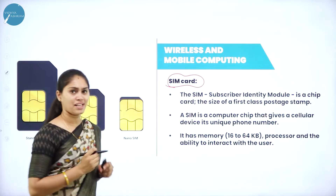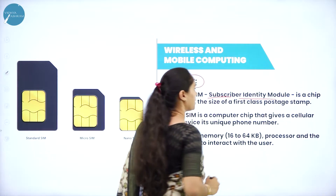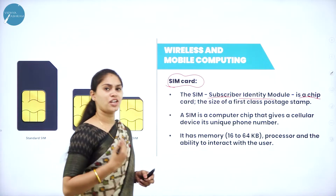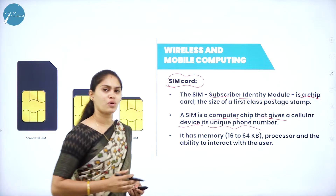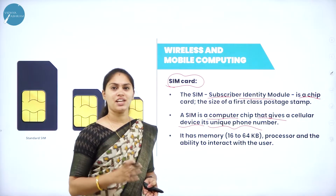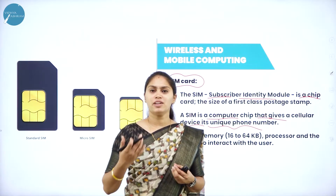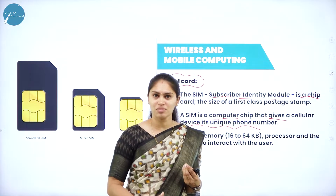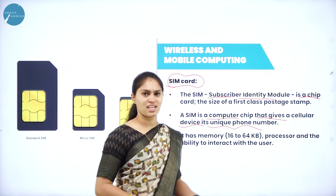Next we have the SIM card. Everybody has a SIM card — what is its abbreviation? SIM stands for Subscriber Identity Module. It is a chip that gives a cellular device its unique phone number. Everyone has a unique mobile number because of this subscriber identity module, which represents the identity of a user. When inserting a SIM, it asks whether to store a contact in the SIM card or the device — meaning the SIM card is capable of storing a small amount of data, and it includes both memory and a processor.